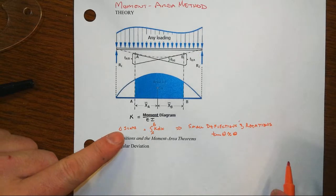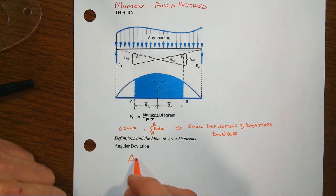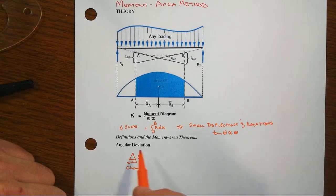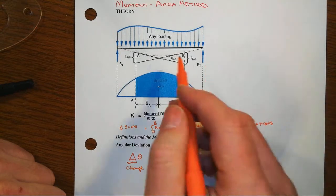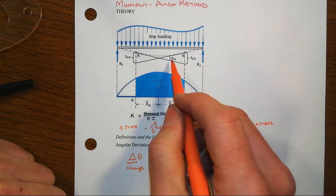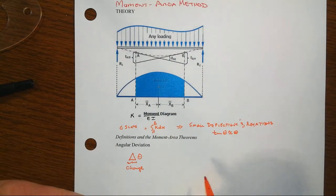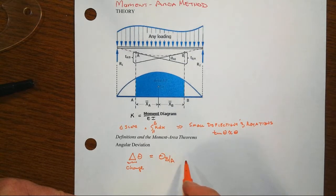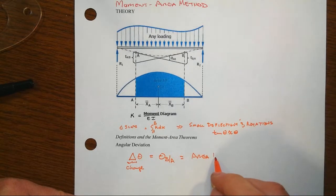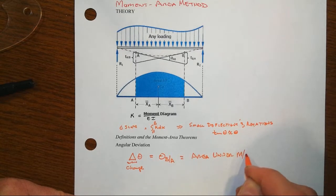A change in the angle, delta here means a change in or a deviation in. If we draw a tangent to the elastic curve at two locations then the angle between those, or the deviation between those two tangents, is what we're after here. That would be theta B with respect to A, and that's just given to us by the area under the M over EI diagram between points A and B.